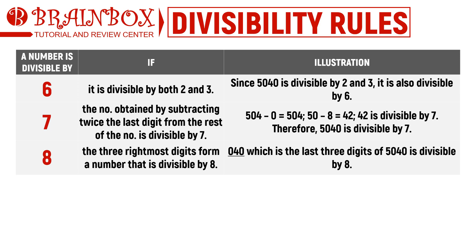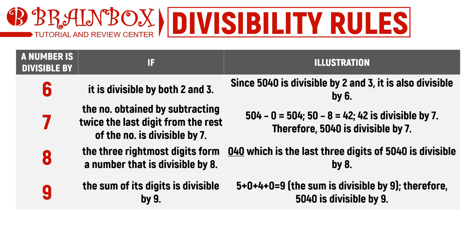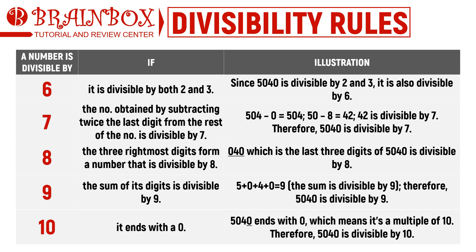Much like the divisibility rule for 3, checking for divisibility by 9 requires finding the sum of the digits. If the resulting sum is divisible by 9, then the number itself is divisible by 9. For 5040, the sum of the digits is 9, which is divisible by 9, so 5040 is also divisible by 9. The rule for 10 is similar to the rule for 5, except we only accept numbers ending in 0. Since 5040 ends in 0, it is a multiple of 10.